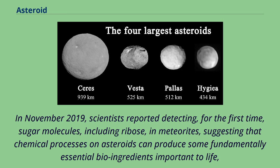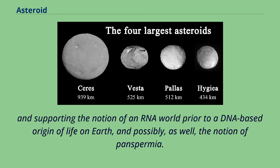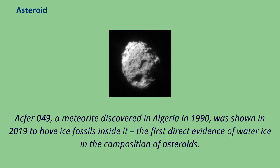In November 2019, scientists reported detecting, for the first time, sugar molecules including ribose in meteorites, suggesting that chemical processes on asteroids can produce some fundamentally essential bio-ingredients important to life, and supporting the notion of an RNA world prior to a DNA-based origin of life on Earth, and possibly the notion of panspermia. A meteorite discovered in Algeria in 1990 was shown in 2019 to have ice fossils inside it — the first direct evidence of water ice in the composition of asteroids.